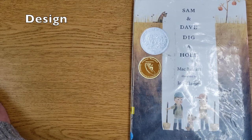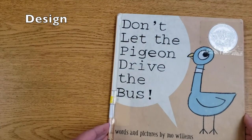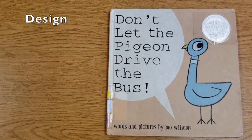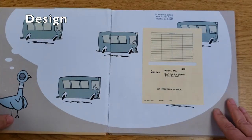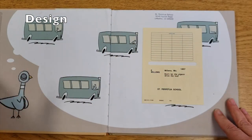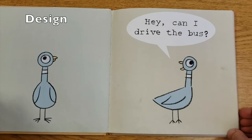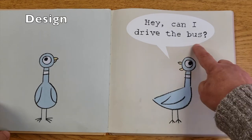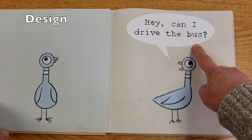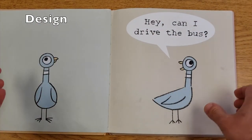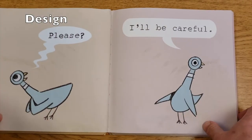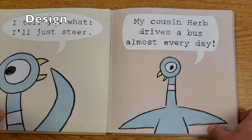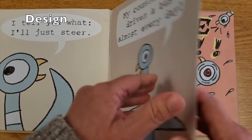The next element to consider is design. Design is everything that puts the book together into one package. We look at the cover, the end papers — the page glued right inside the cover — and the layout of the pages. When looking at the layout, is the font readable? Is it the right size for the intended audience? Is there plenty of spacing so that the child can feel successful as they turn the page? Do the illustrations and the text go together?